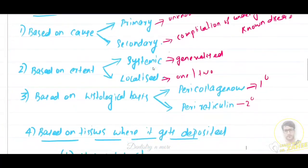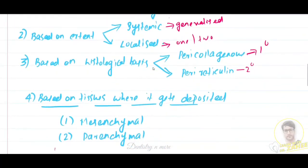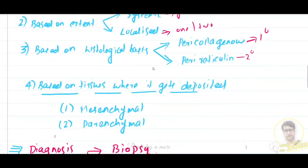Next classification is based on the tissues where it gets deposited - mesenchymal or parenchymal. In mesenchymal, it is organs derived from mesoderm, and parenchymal organs derived from the remaining ectoderm and endoderm.